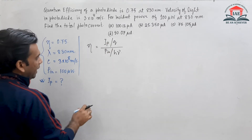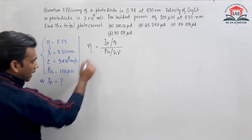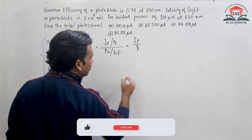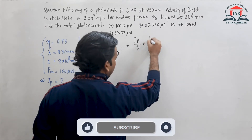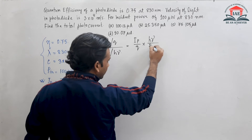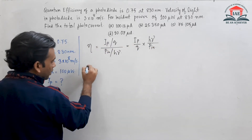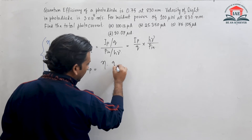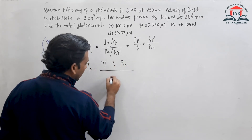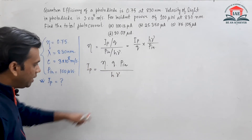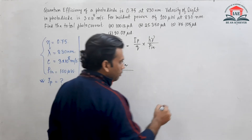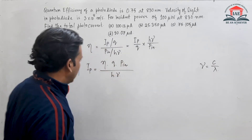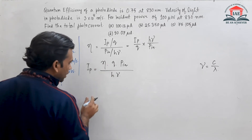From this equation, we can find the value of ip. The photocurrent equation can be written as: ip = η × (P / q) × (hν). Since ν = c/λ, we substitute c by lambda in place of frequency.